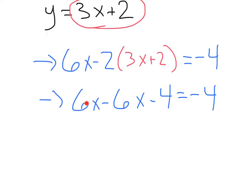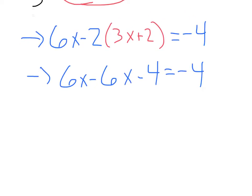That's going to give us 6x minus 2, subbing in that y, 3x plus 2 equals negative 4. Let's simplify from there. We're going to get 6x minus, distributing this 2, negative 2 times 3x, negative 6x. Negative 2 times 2 minus 4 equals negative 4. Let's take a look here. We've got 6x minus 6x. Those two are going to cancel out. And now, wait a second. What's this?